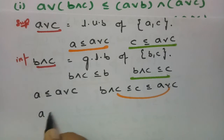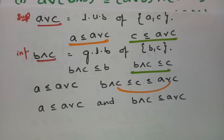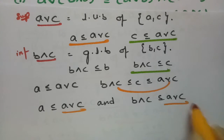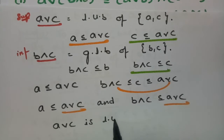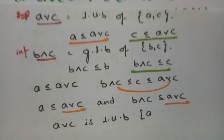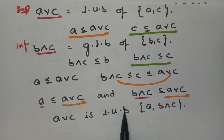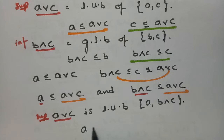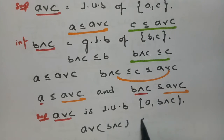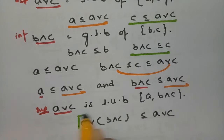Connecting: a ≤ a ∨ c and b ∧ c ≤ c ≤ a ∨ c. Since a ∨ c acts as the least upper bound (supremum) for the set {a, b ∧ c}, we can write a ∨ (b ∧ c) ≤ a ∨ c. Call this Equation B.